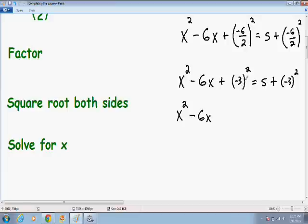is actually positive because when you square a negative it becomes positive. So negative 3 squared is a positive 9 is equal to 5 plus negative 3 squared once again is positive 9. Now finally we can move on to our next step. And our next step is to factor.